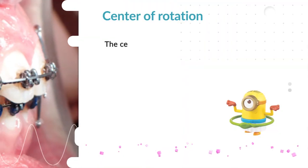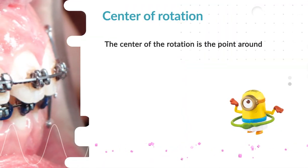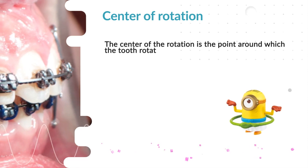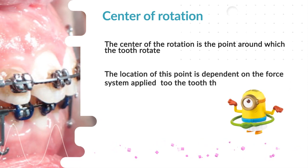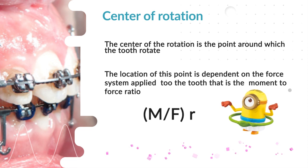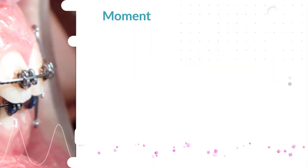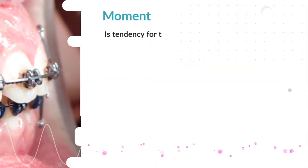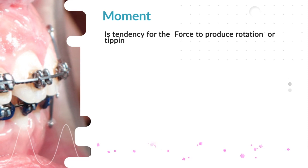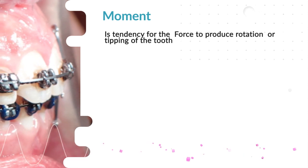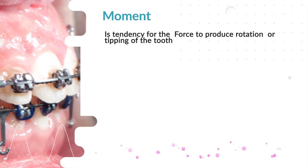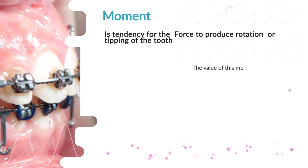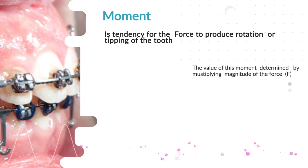The center of rotation is the point around which the tooth rotates. The location of this point depends on the force system applied to the tooth. Moment is a tendency for a force to produce rotation or tipping of the tooth. The value of this moment is determined by multiplying the magnitude of the force by the perpendicular distance.